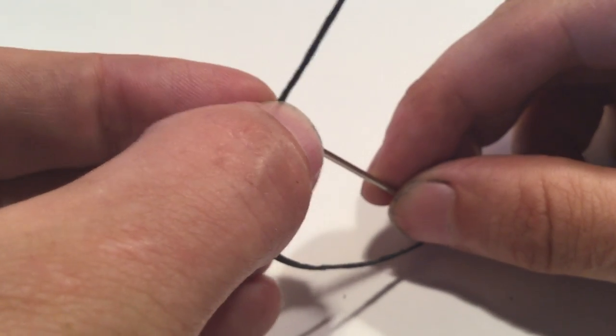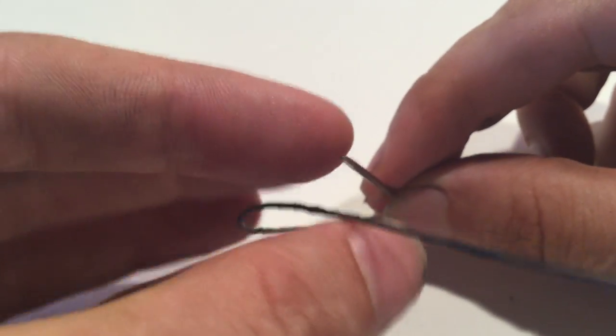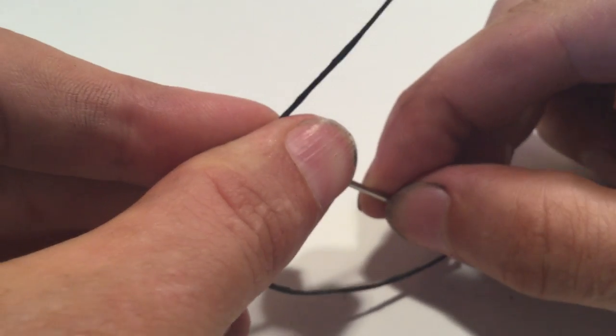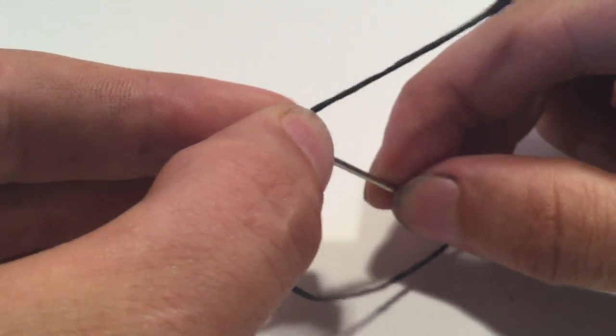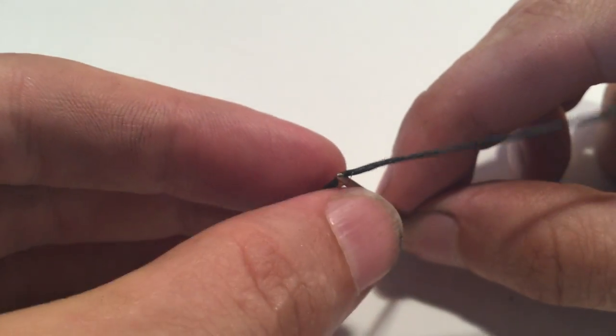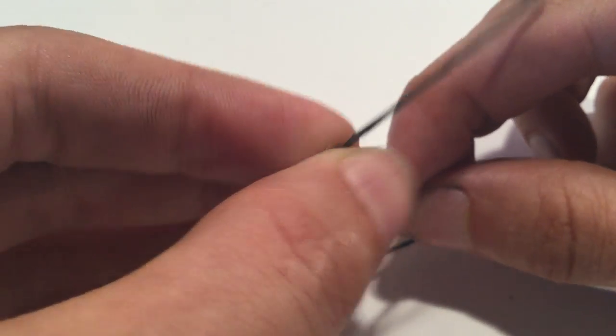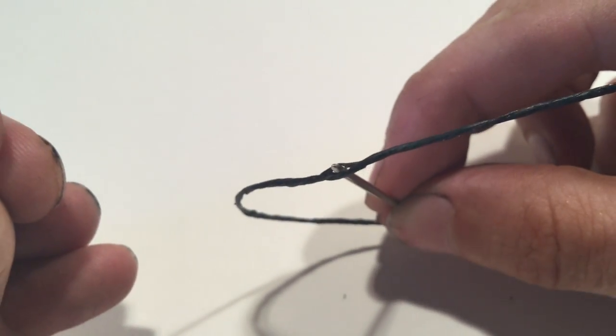And you're going to pierce through the threading. You're going to actually impale the threading with itself using the needle. You don't just want like a little tiny fiber. You want to get a fair amount of fiber on either side like that.